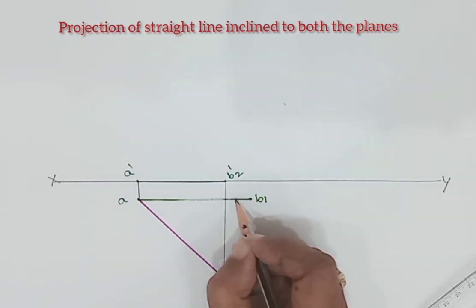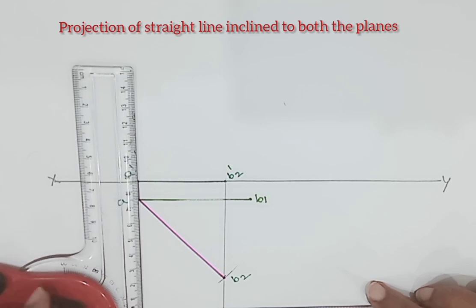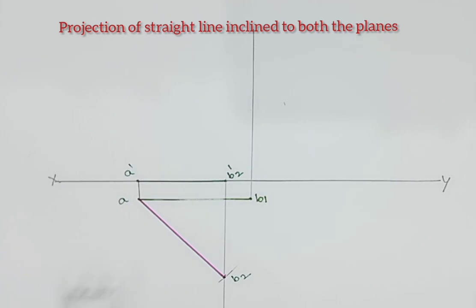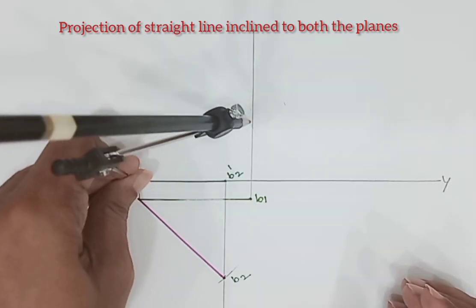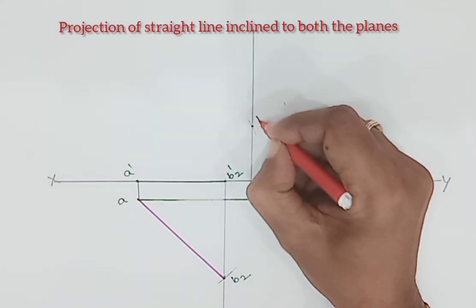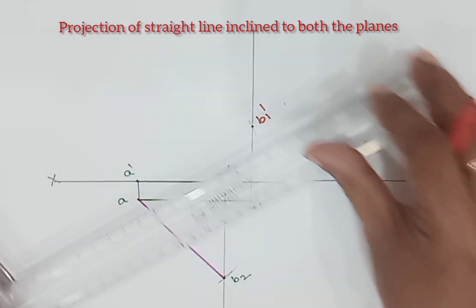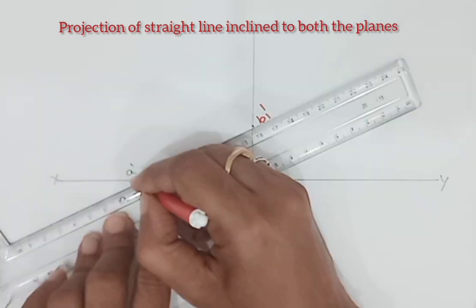This is the top view. AB1 is the top view, that is reduced length in the top view. For that we will get true length in the front view. So get B1, draw projector, then 75 mm as a radius, A dash as a center, draw an arc on this projector. Name this point as B1 dash. Join A dash B1 dash.